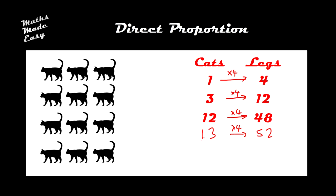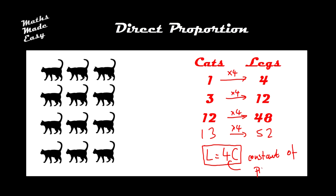This could be written more neatly as a formula, which is L equals 4C. So the number of legs equals four times the number of cats. If you can write a formula like this, then these two variables L and C are said to be in direct proportion. This number four is called the constant of proportionality — constant because it stays the same.